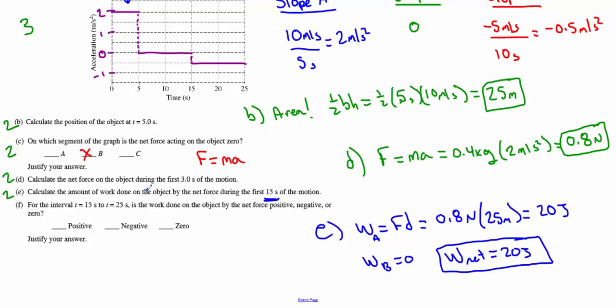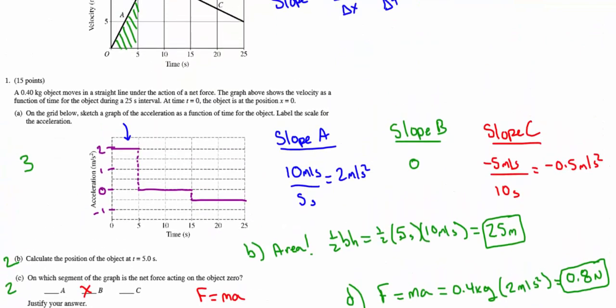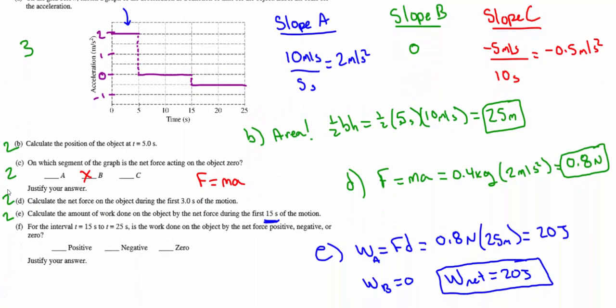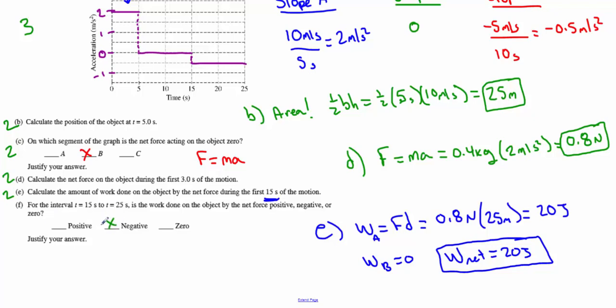Part F: For the interval of 15 to 25 seconds, is the work done on the object by the net force positive, negative, or zero? We know there is a net work because there is acceleration, and acceleration is related to force, and force is related to work. It's negative work because the object is slowing down. You can justify it by talking about work being change in energy. In this example, energy is kinetic energy. We start off with a higher kinetic energy at 10 meters per second and finish at a lower velocity of 5 meters per second, which means the kinetic energy goes down, which means work was acting against the object. F was worth 3 points: indicating it's negative, indicating you know it's negative because the speed is decreasing, and connecting that the work is a result of the decrease in speed.